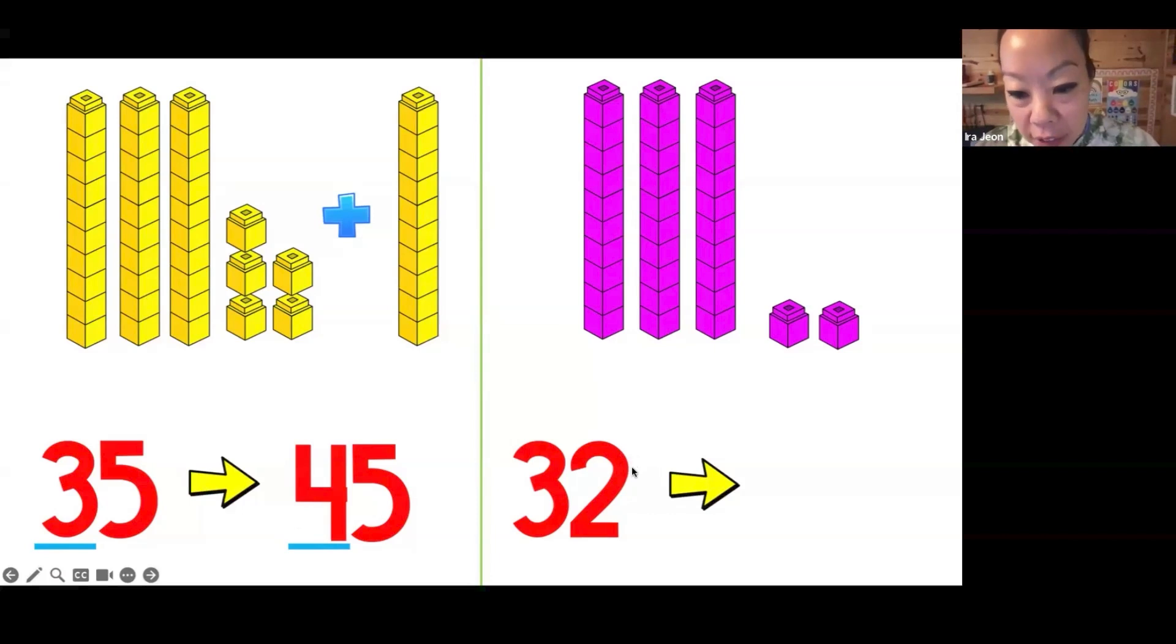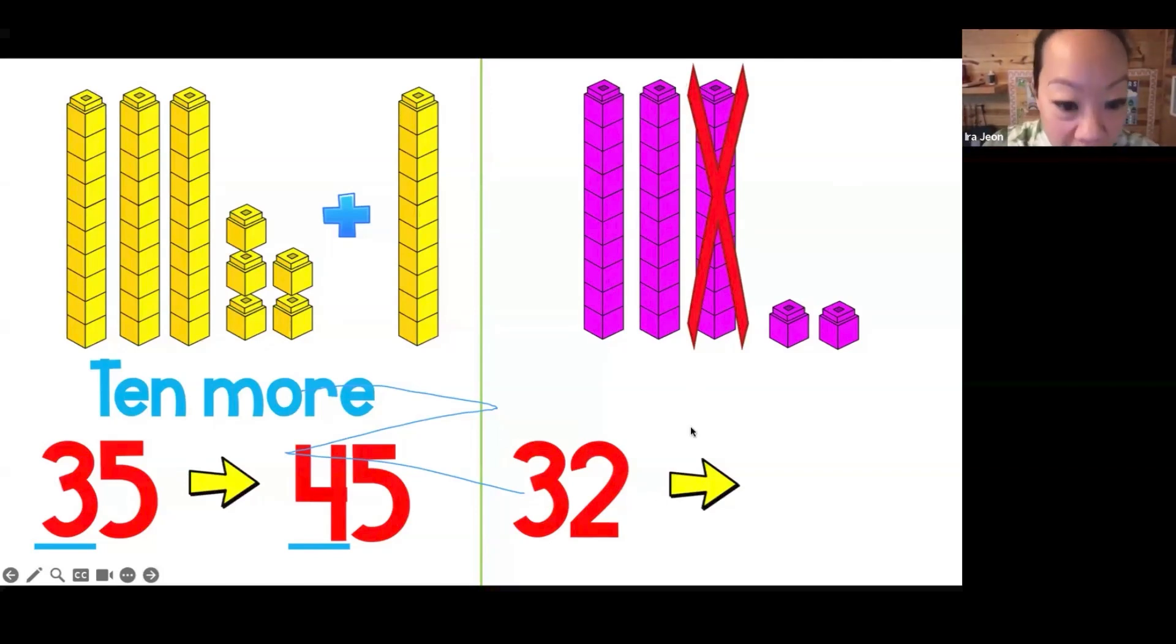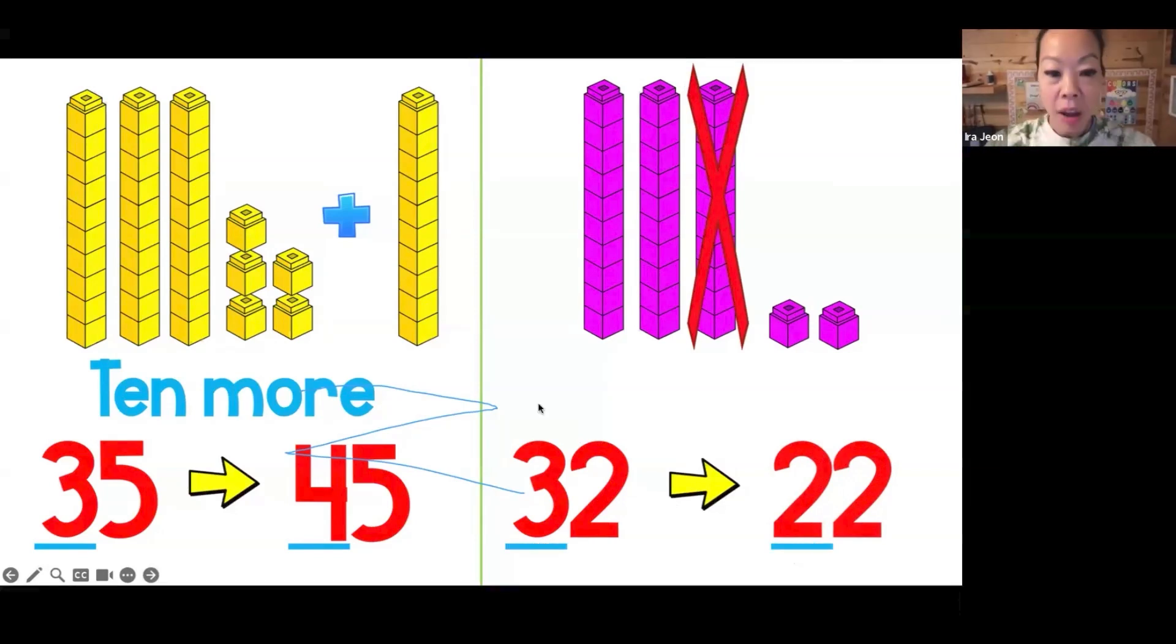Now I have 32 place value blocks. If I cross out 10, then obviously we are doing 10 less. If I had 32 blocks and I took 10 away, that means my number will change to 22. Again, our 10 spot has decreased by one since we took 1 ten away. That would be 10 less.